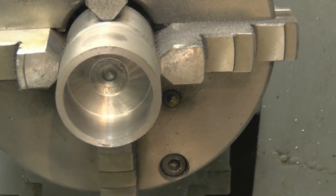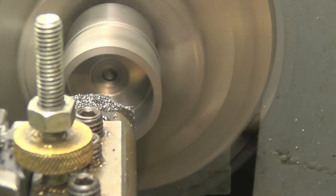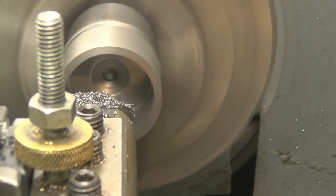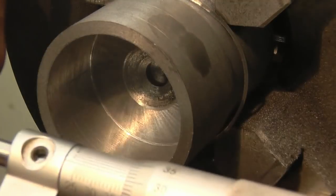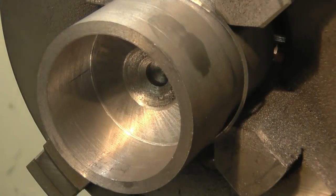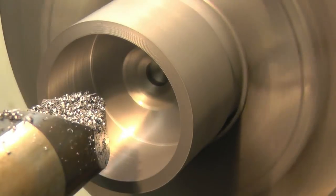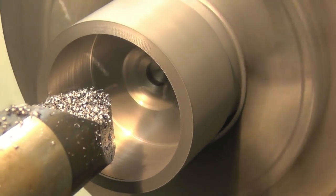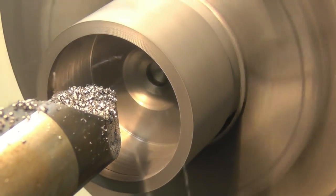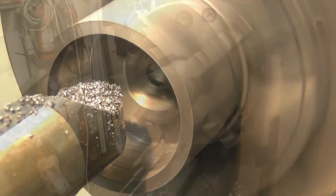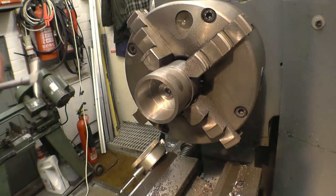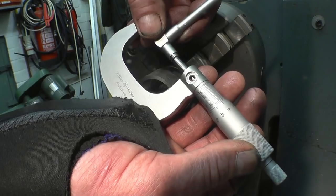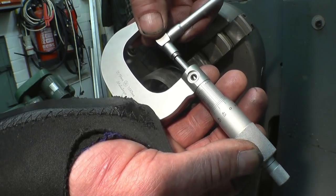So we'll take one tenth of a mil off one side of it with a nice slow feed rate. We're at 37.8 now. Like a spring cut.